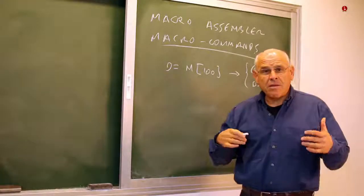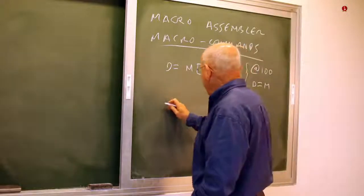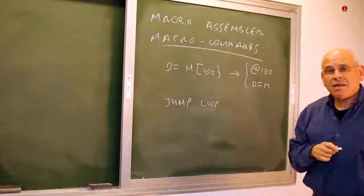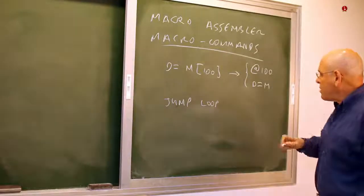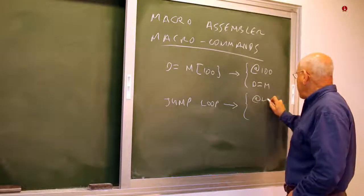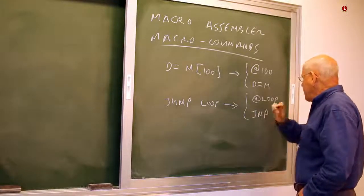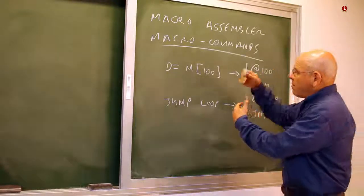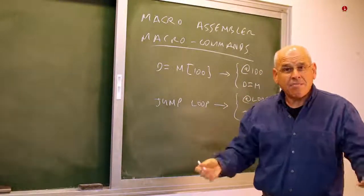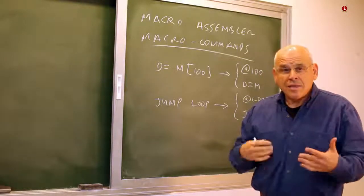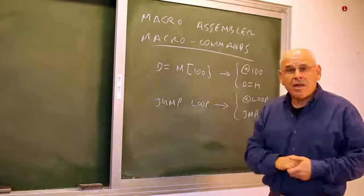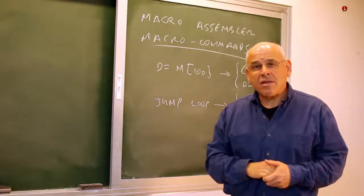Likewise, think about jump instructions. For example, it would be very natural to say something like jump to a particular label, but in the Hack language such an instruction is not permitted. So I can expect this instruction to be translated into two instructions: at loop, followed by standard jump commands. These are macro instructions, and in order to close this gap, I have to extend the assembler so that whenever it encounters a command like this, it translates it into two machine language commands rather than a single one.